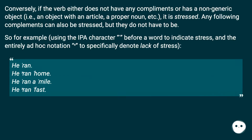Conversely, if the verb either does not have any complements or has a non-generic object (i.e., an object with an article, a proper noun, etc.), it is stressed. Any following complements can also be stressed, but they do not have to be. So, for example, using the IPA character before a word to indicate stress, and an ad hoc notation to specifically denote lack of stress: 'He ran.' 'He ran home.' 'He ran a mile.' 'He ran fast.'